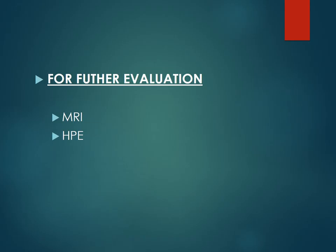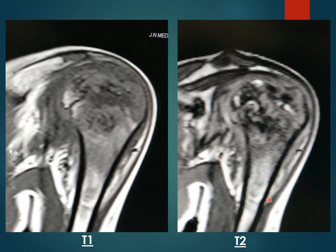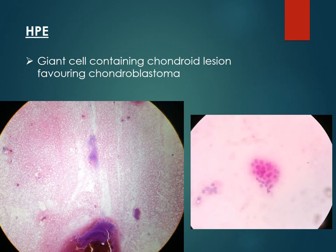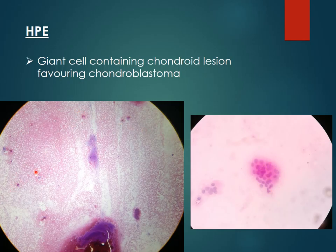For further evaluation, MRI and histopathological examination were performed. MRI shows hyperintensity on T2 in the upper part of the diaphysis, indicating bone marrow edema. The histopathology report states: giant cell-containing chondroid lesion, favoring chondroblastoma. The actual histopathology slide of our patient shows chondroid matrix with several giant cells — confirming our diagnosis of chondroblastoma. Thank you.